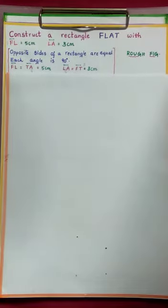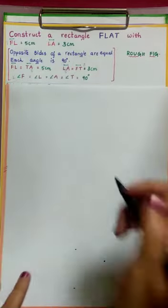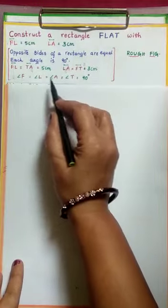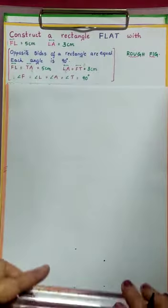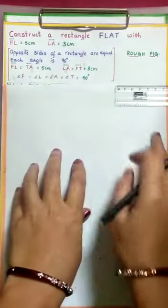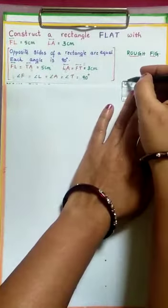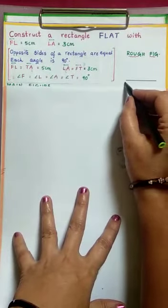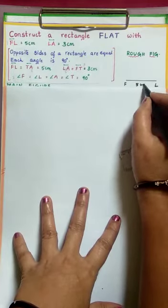So using this, first let us construct a rough figure. Each angle is 90 degrees — angle F, angle L, angle A, angle T, all measures equal to 90 degrees. Now first, we take FL as base, 5 cm.